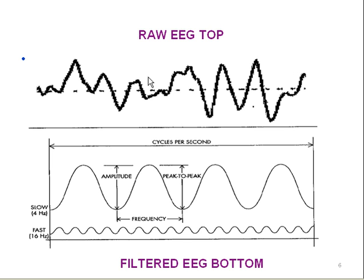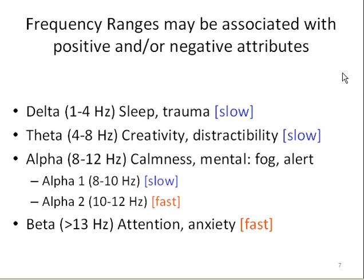This is an example of the raw EEG and specific morphology. This is the morphology of a theta wave, and here is the sinusoidal pattern morphology of alpha waves. Beneath this is the typical presentation of the filtered EEG.